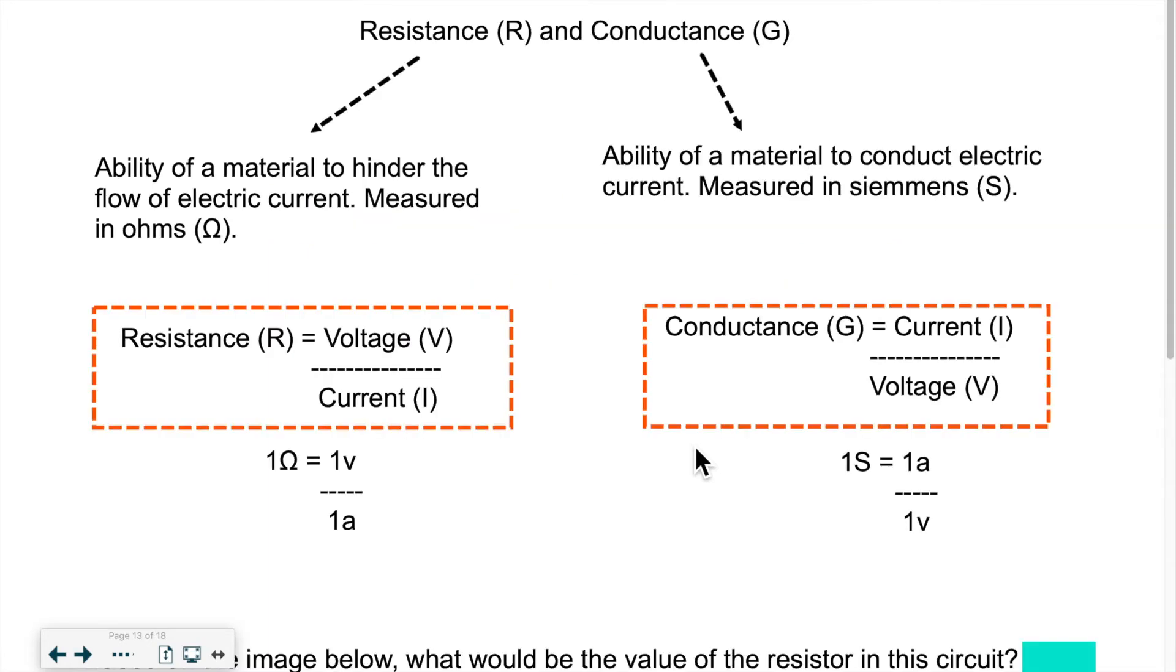So what is resistance? Resistance is the ability of a material to resist, to hinder the flow of electric current. It's measured in ohms, and the symbol is omega. Resistance is basically the ratio of voltage over current. If we look at the units, one ohm is equal to one volt over one amp.